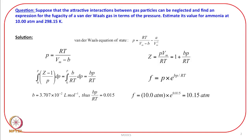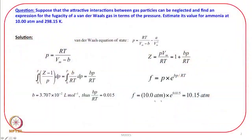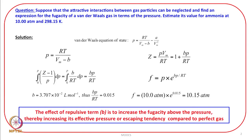And this is what we were expecting, because the attractive interactions between the gas particles are being neglected. We are only accounting for repulsion. Repulsion means the molecules will tend to repel each other, and therefore the escaping tendency of the gas molecules will be more. Fugacity will be more than pressure. And that is what we see — fugacity is 10.15 atmosphere whereas the given pressure was 10 atmosphere. So escaping tendency is more. The effect of the repulsive term B is to increase the fugacity above the pressure, thereby increasing its effective pressure or escaping tendency compared to the perfect gas.